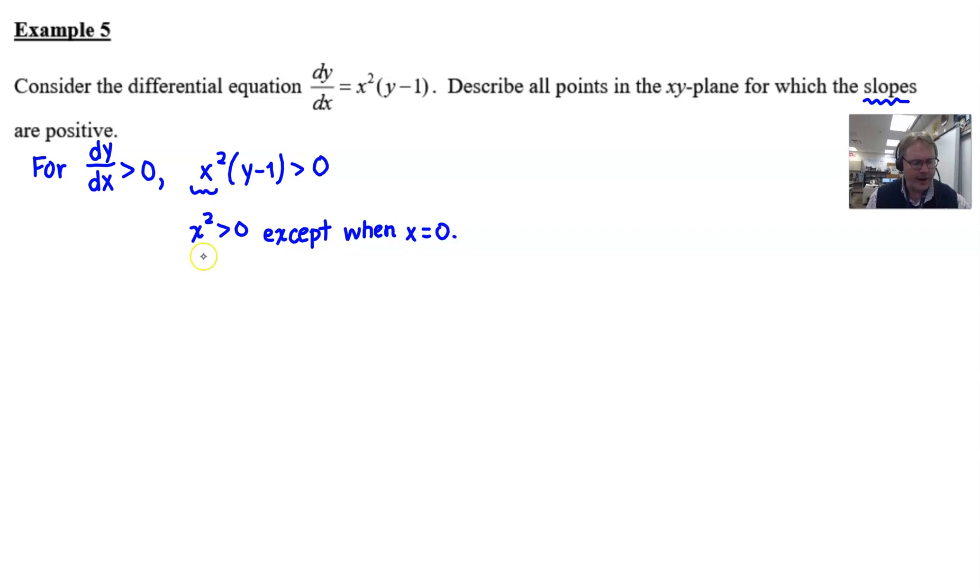All right. Well, then y minus one, what about his story? Well, y minus one is always positive when y is greater than one. Pretty cut and dry. So basically, we just need to put these ideas together and the description of the points where we have positive slopes. And it would be nice to write a full sentence there. So we'll say the slopes are positive, and just state those two conditions: when x is not equal to zero and y is greater than one.